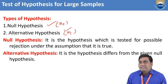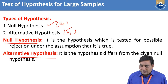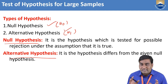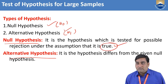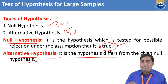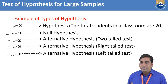What are null and alternative hypotheses? Both are just our assumptions. In null hypothesis, we assume that whatever statement is passed is true. In alternative hypothesis, we assume that whatever statement is passed is false — meaning the hypothesis differs from the given null hypothesis. I will explain with an example how to get null and alternative hypothesis.